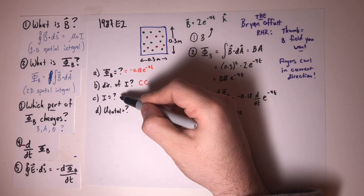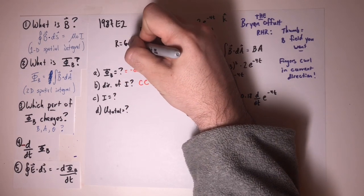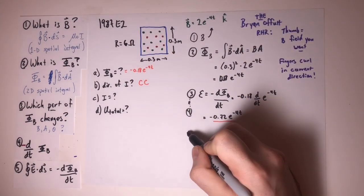As for the current, we need to know that the resistance of the loop is 6 ohms and then this becomes very easy.